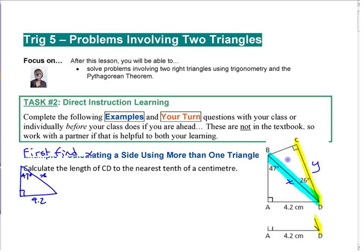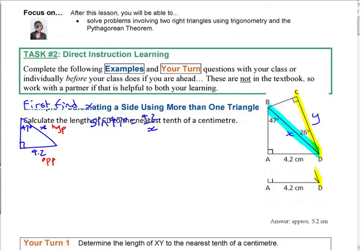Drawing it separately makes it easier since it gets hard to see when it's stuck to the other triangle. From the 47-degree angle, 4.2 is the opposite side and x is the hypotenuse, so we're using sine. Sine of 47 equals 4.2 over x — x is on the bottom.